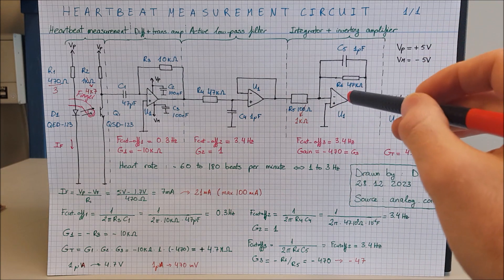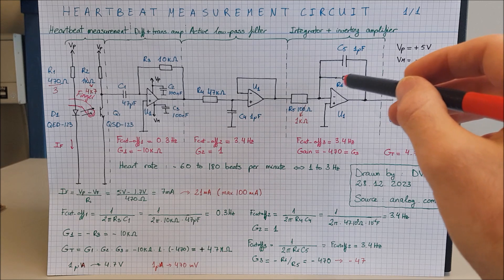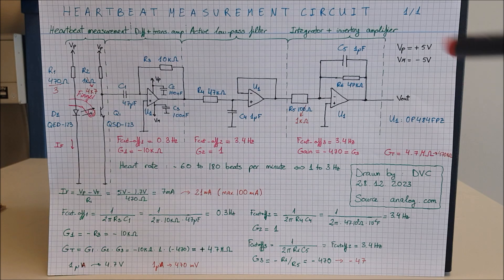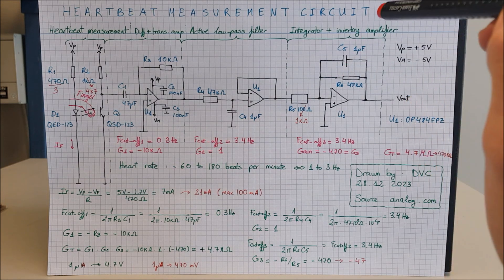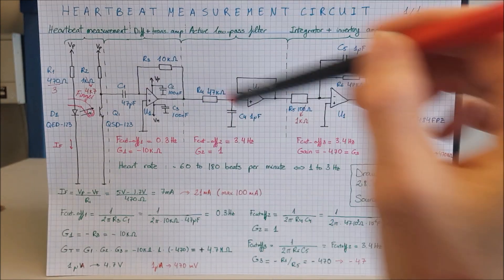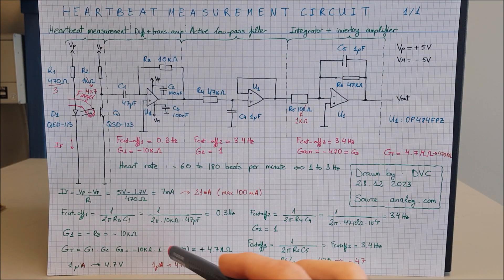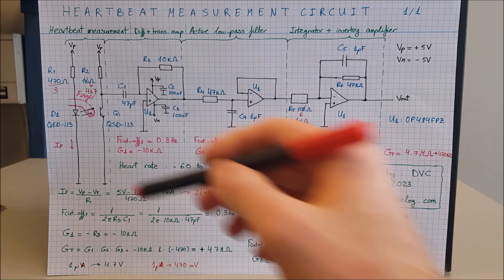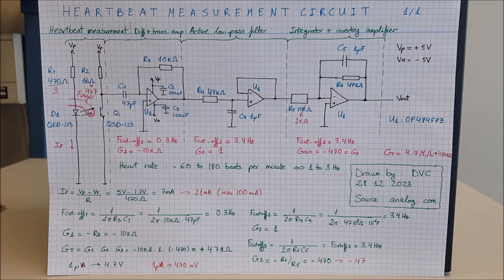We have an inverting amplifier with a gain of minus R6 divided by R5. That is minus 470. Let's put everything together. At the output, we will have a voltage signal whose gain is the gain of the third stage times the second stage times the first stage. That is minus 10 kilo ohms times 1 times minus 470, which is 4.7 mega ohms. It means that a current of 1 microampere produces 4.7 volts.